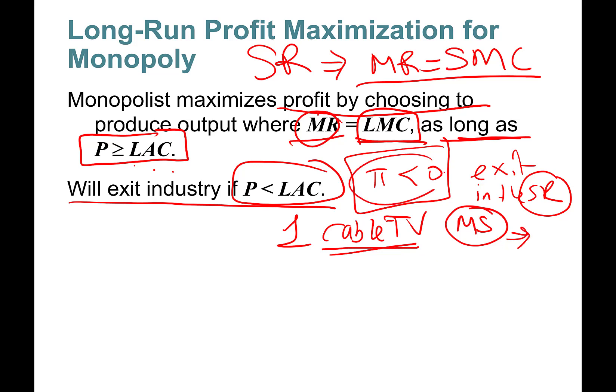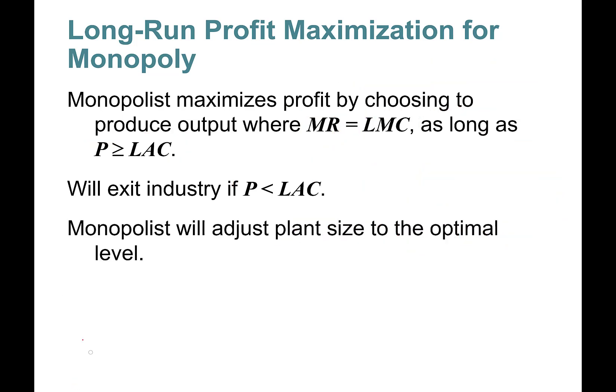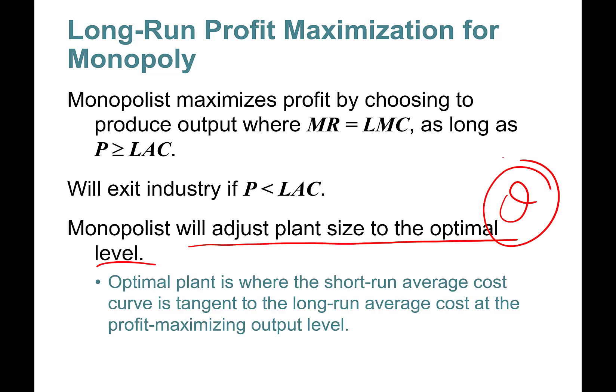Okay, monopolist will adjust plant size to the optimal level of production, that Q optimal level of scale. Optimal plant is where the short-run average cost curve is tangent to the long-run average cost at the profit-maximizing output level.